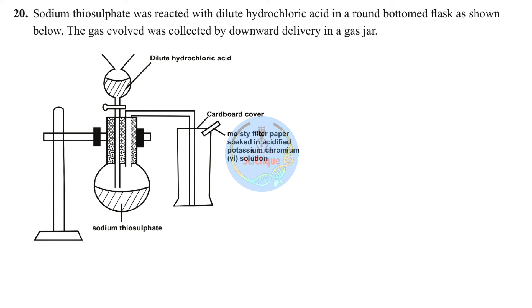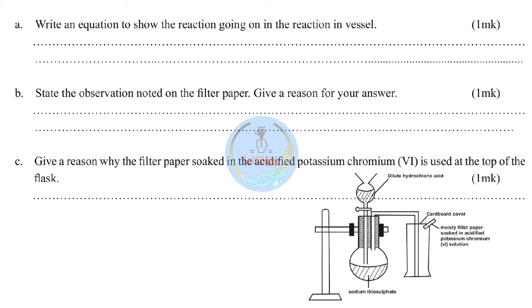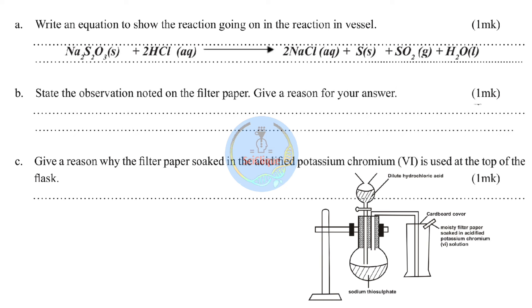Question nineteen: sodium thiosulfate reacted with dilute hydrochloric acid. The products are sodium chloride, sulfur (yellow precipitate), sulfur dioxide, and water. The gas collected by downward delivery is sulfur dioxide. Part b: a moist filter paper soaked in acidified potassium dichromate solution is placed at the top. Initially orange, it turns green on contact with sulfur dioxide.